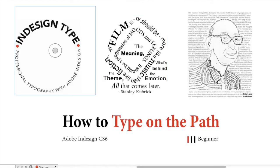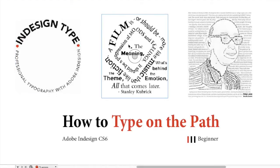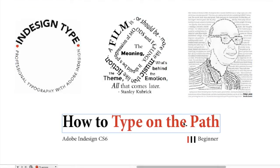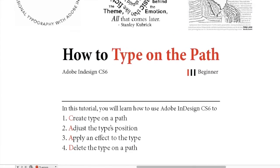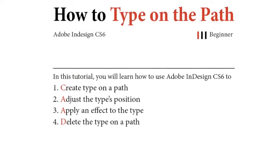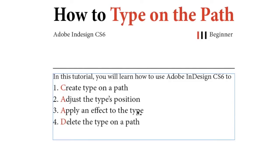Text along a path is a wonderful way to create all kinds of special effects on your page. In this tutorial, you will learn how to use Adobe InDesign to create a type on a path, adjust the type's position, apply an effect, and delete the type on the path.